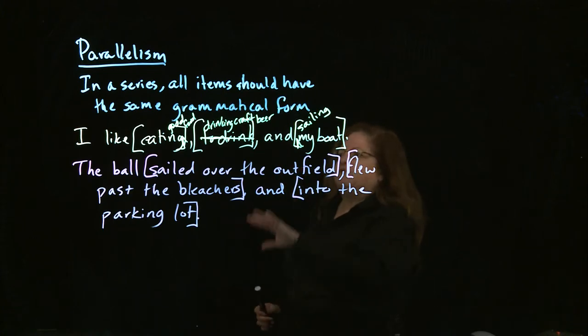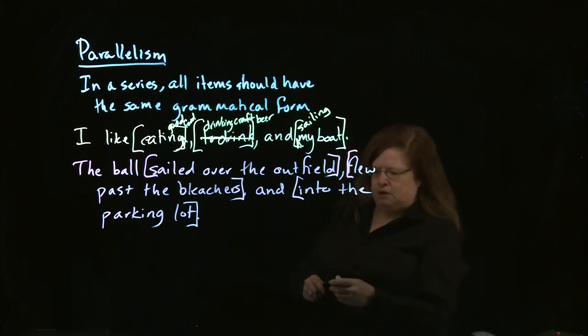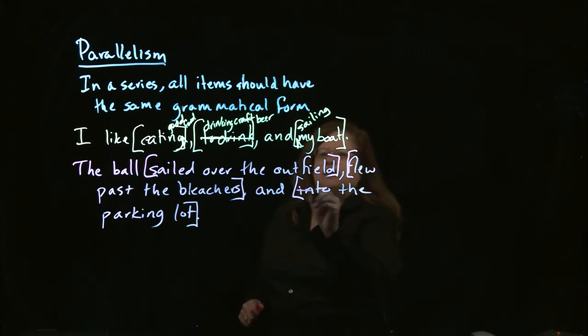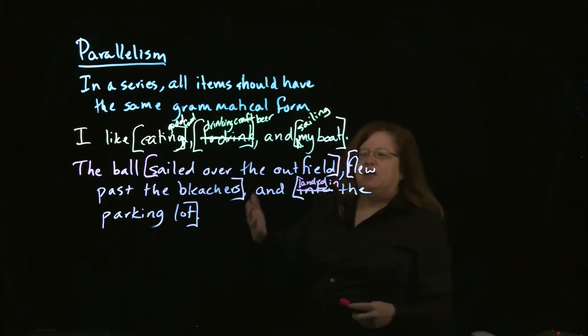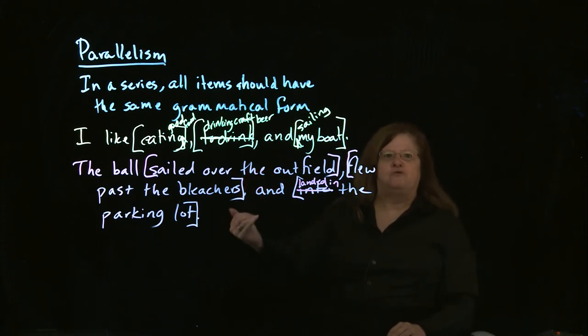So what we look at, if we look at this structure, sailed, past tense verb, over the outfield, prepositional phrase, flew past tense verb, past the bleachers, prepositional phrase. Then we have, into the parking lot. That's just a prepositional phrase. There is no verb. So what we want to do then, is say something like, and landed in the parking lot. So now we have something that's parallel. It's also going to be something that the reader is going to be able to follow reasonably well. And by the way, I don't require everybody to learn diagramming as a sentence tool.